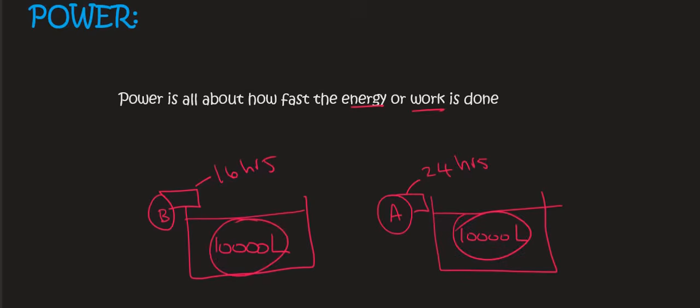However, your neighbor's pump, which is pump B, takes 16 hours, whereas your pump takes 24 hours. We would therefore say that your neighbor's pump is more powerful because it can do the energy or the work much faster.